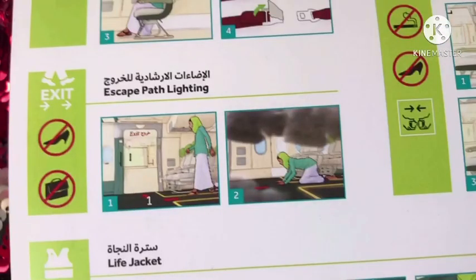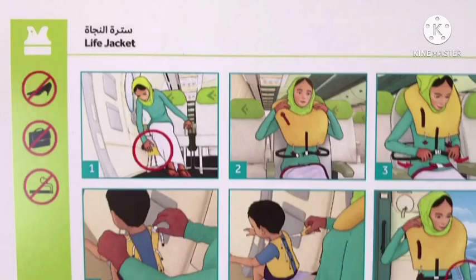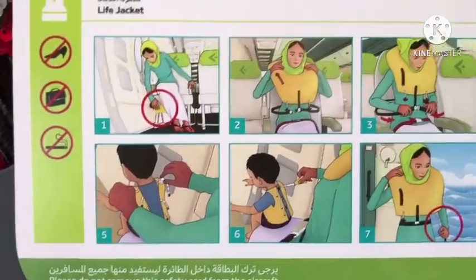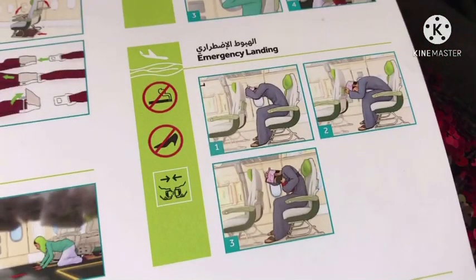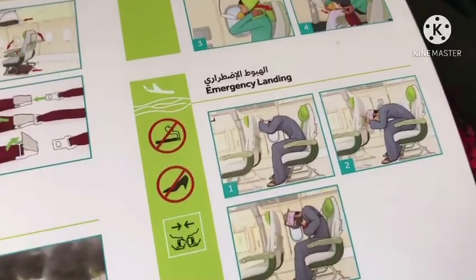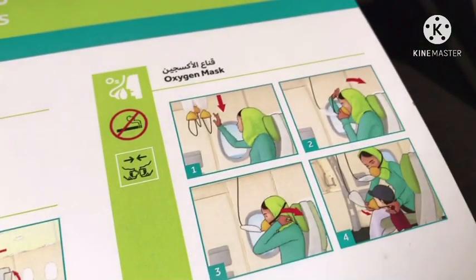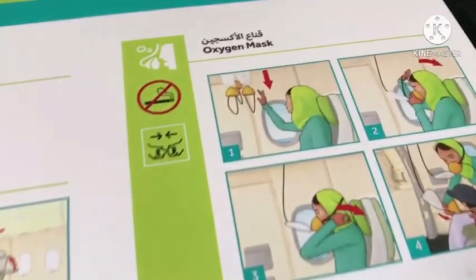Next we have al-irshaadat al-ishadiya — you need to follow those safety instructions. سترة النجاة — life jacket. These rules show how you put on a life jacket. Next we have al-hubut al-iztirari, which means emergency landing — these are the steps. Next we have قناع الأوكسجين — oxygen mask. Follow these steps for that too.